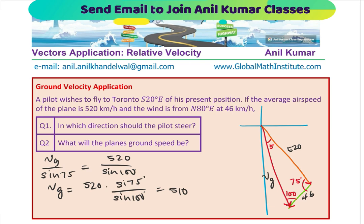Let us calculate this: 520 times sine of 75 divided by sine of 100. Vg is approximately 510 kilometers per hour. The direction is from south 25 degrees east. So the ground velocity magnitude is approximately 510 km/h in the direction south 25 degrees east.